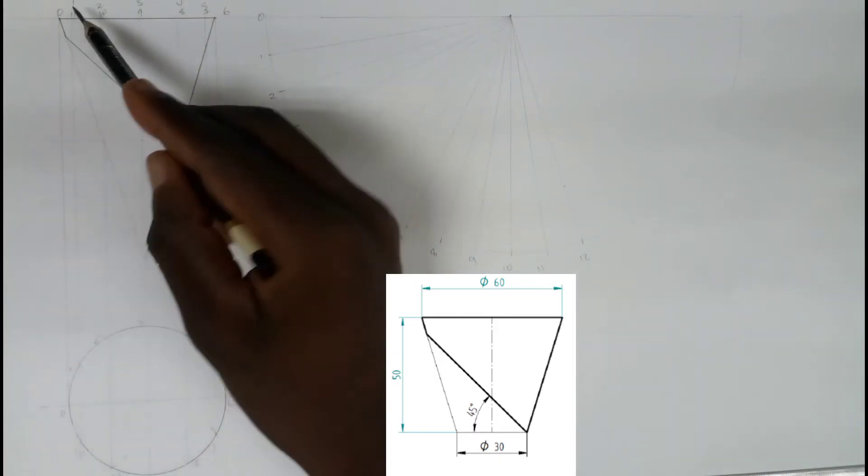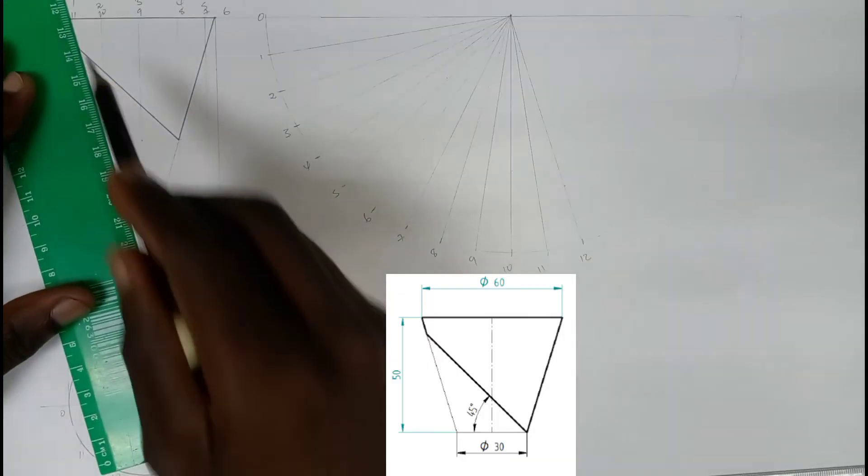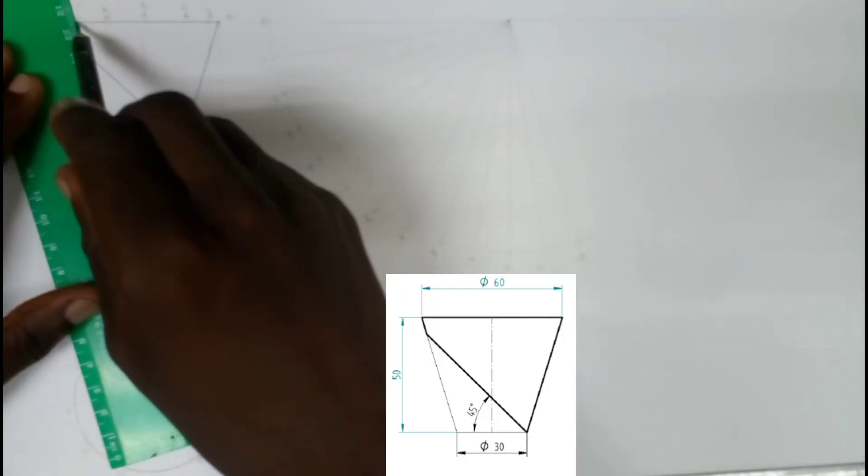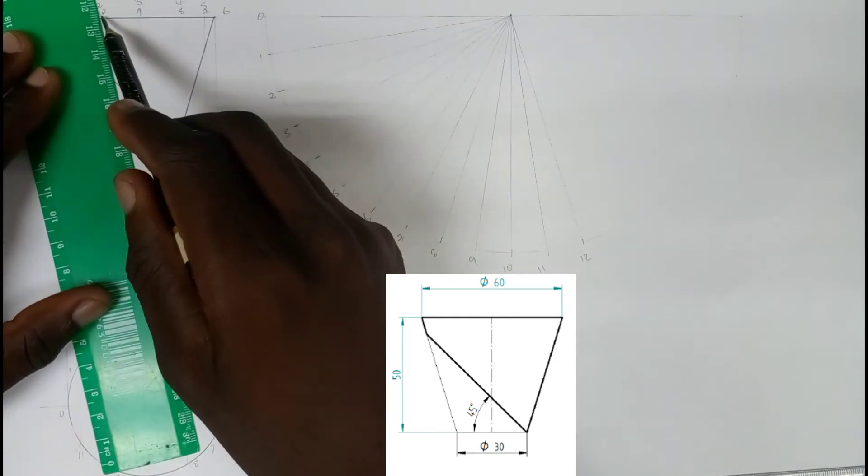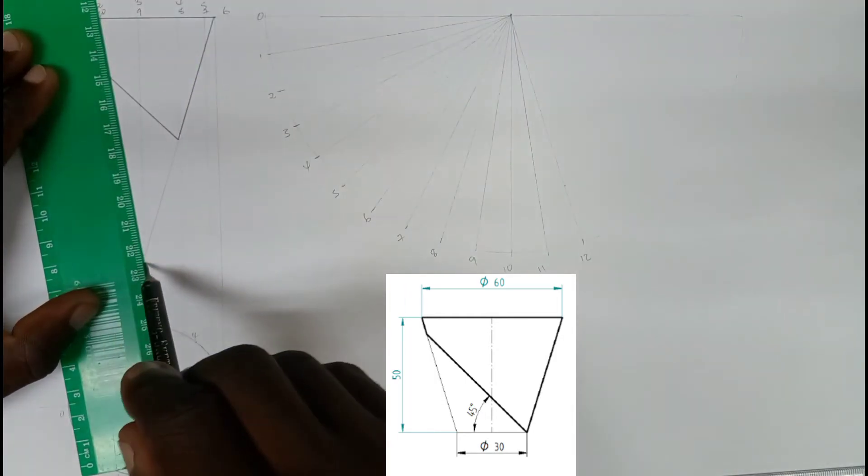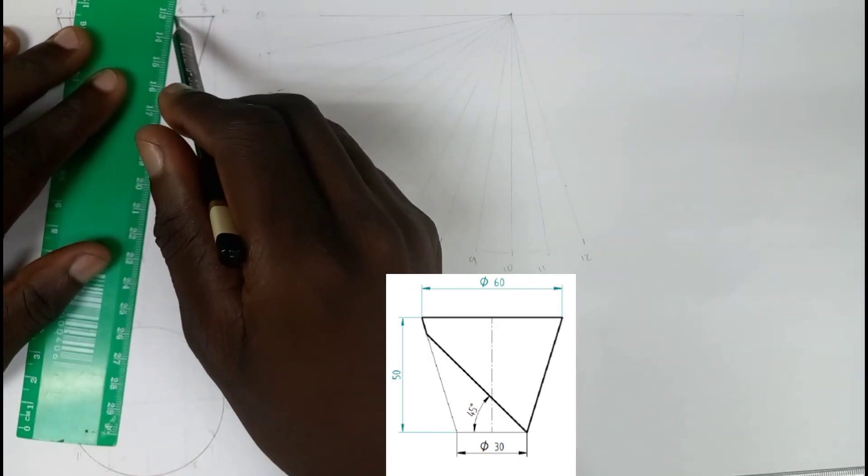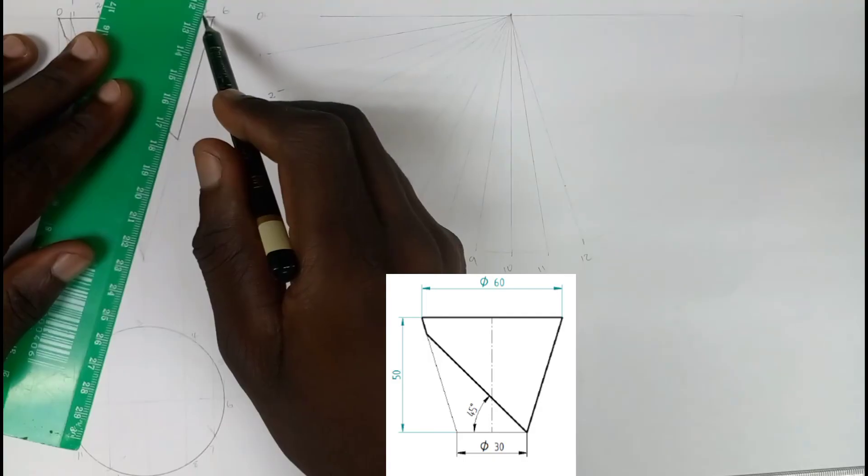Join each and every point to the apex, so a series of lines to the apex. I'm going to join 1 to 11, 2 to 10, 3 to 9, 4 to 8, and 5 to 7.